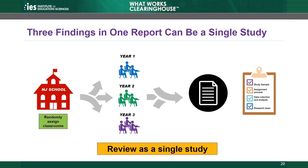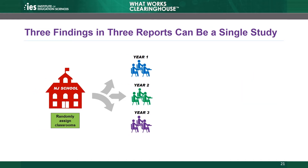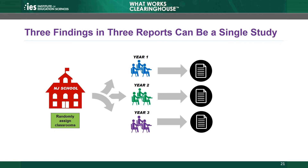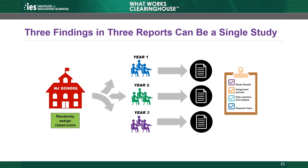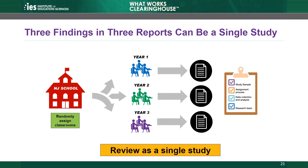The study samples in each cohort were formed within the same school, the same random assignment process was used for each cohort, the researchers used the same data collection and analysis procedures, and the same research team was responsible for all of the findings. Now, imagine that instead of reporting the combined findings in one manuscript, the authors released a series of reports, each reporting a single year's finding. These findings again share all four characteristics, so the WWC would review the series of reports as a single study. The fact that the authors released the findings separately in different reports does not affect how the WWC reviews the findings.